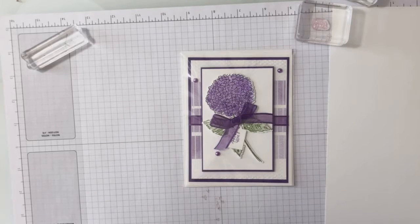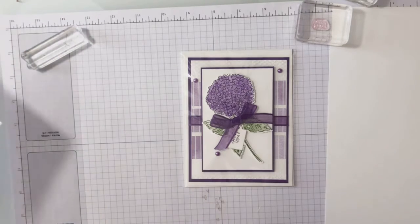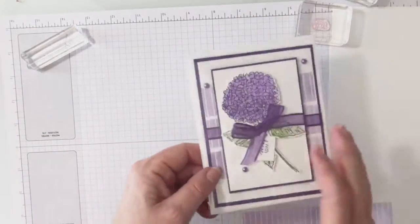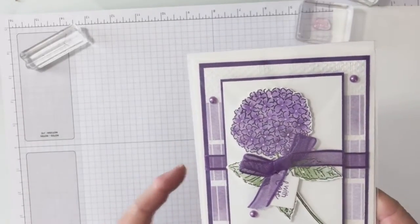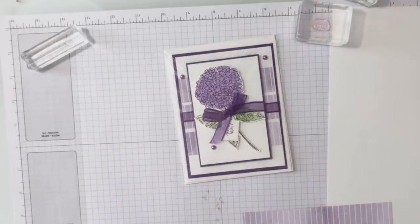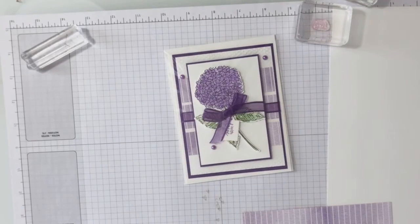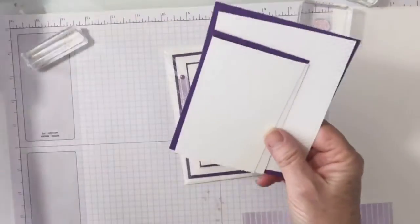Okay ladies, so this is card number six that we're going to do now of the Hydrangea Haven card kit. Let's get it going. This is the card. It's really simple, very pretty, very elegant. This is what is in your kit.